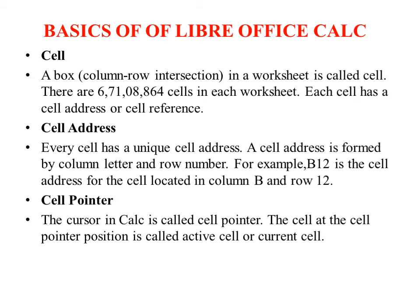The cell address is unique and identifies a cell. It is created by a column letter and a row number — for example, column B and row 12 gives cell address B12. The currently selected cell is called the active cell, indicated by the cursor.